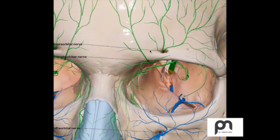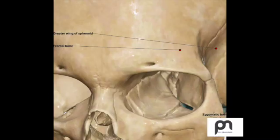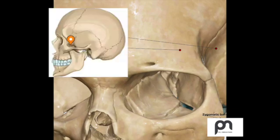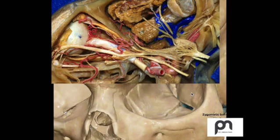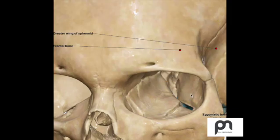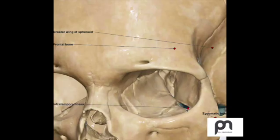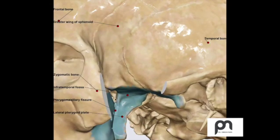We will have one more session about the anatomy of the nerves. The whole purpose of understanding this 3D anatomy is understanding that we can approach the ITF via the transorbital approach. If we drill inferior lateral and slightly go posterior to the inferior orbital fissure, we land up in the infratemporal fossa, that is the ITF.